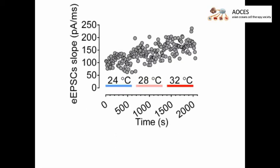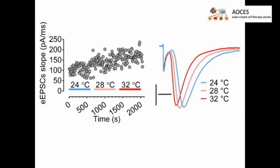Shown here is an example of the evoked EPSCs slope from a single nucleus accumbens shell MSN. Increasing the temperature from 24 to 28 and to 32 degrees Celsius increases the slope of evoked EPSCs.